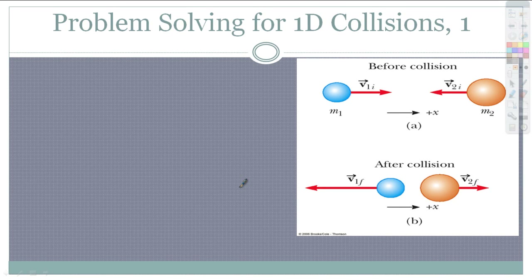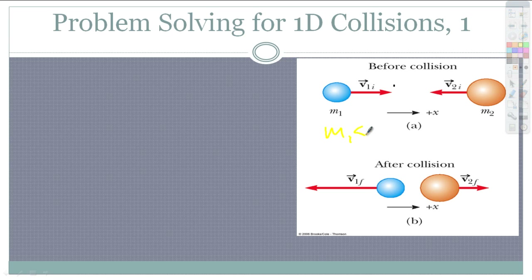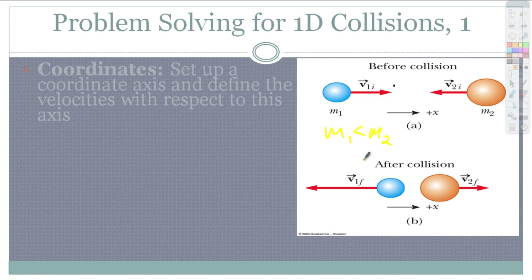Today I am going to show you how to solve some problems with one-dimensional and two-dimensional collisions. Here I have a picture on the right showing before and after the collision. We can see that M1 is smaller than M2. So if they both travel towards each other with the same velocity, when they rebound, this one is going to have a larger velocity. A lot of momentum is going to be transferred from the big guy to the little guy, so he is going to bounce back faster and in the opposite direction.